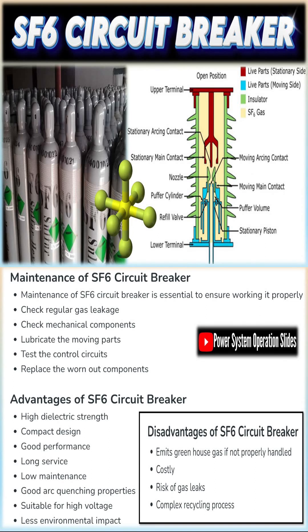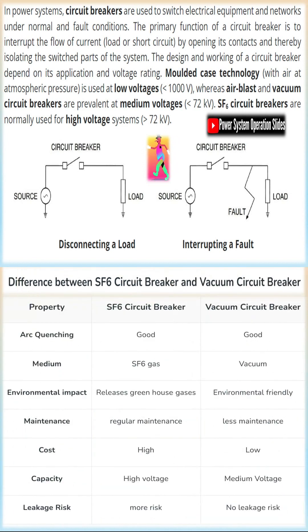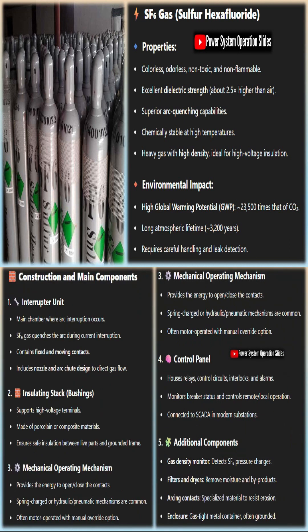In power systems, circuit breakers are used to switch electrical equipment and networks under normal and fault conditions. The primary function of a circuit breaker is to interrupt the flow of current — load or short circuit — by opening its contacts and thereby isolating the switched parts of the system. The design and working of a circuit breaker depend on its application and voltage rating.